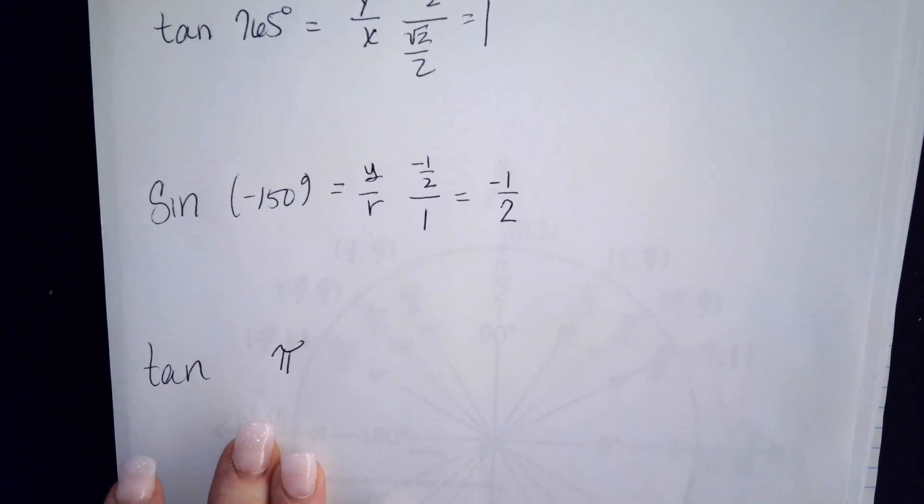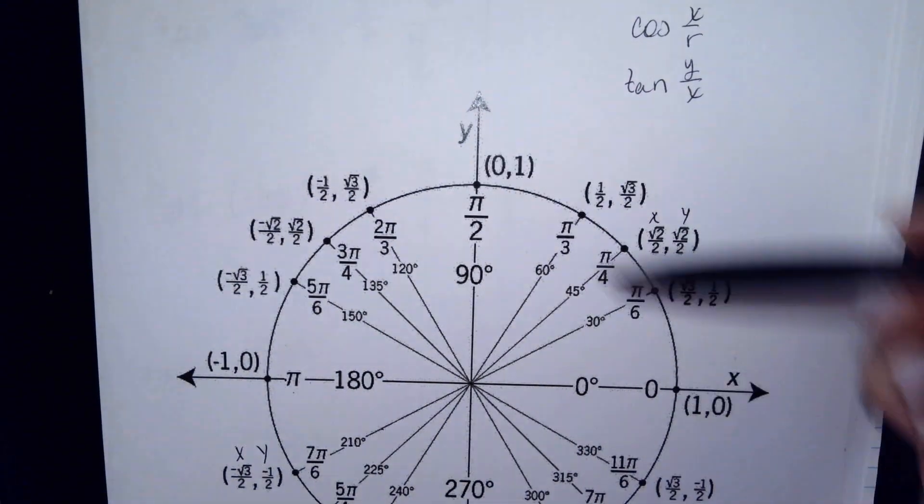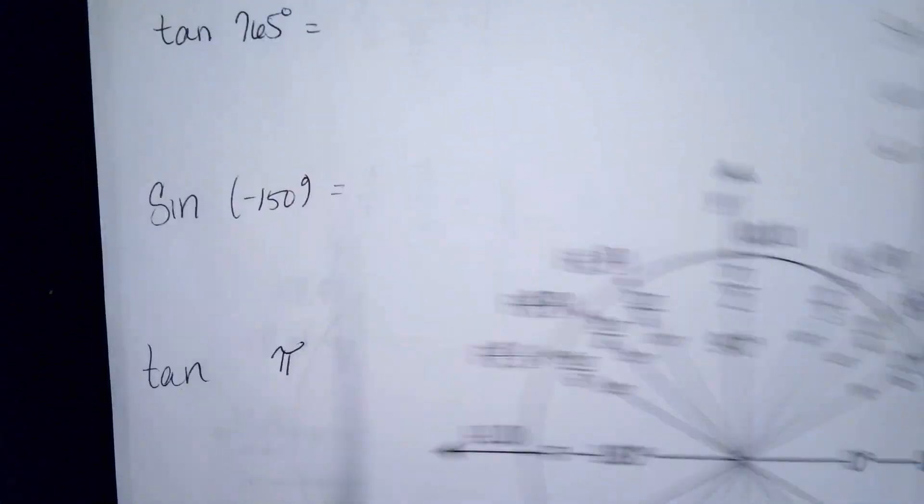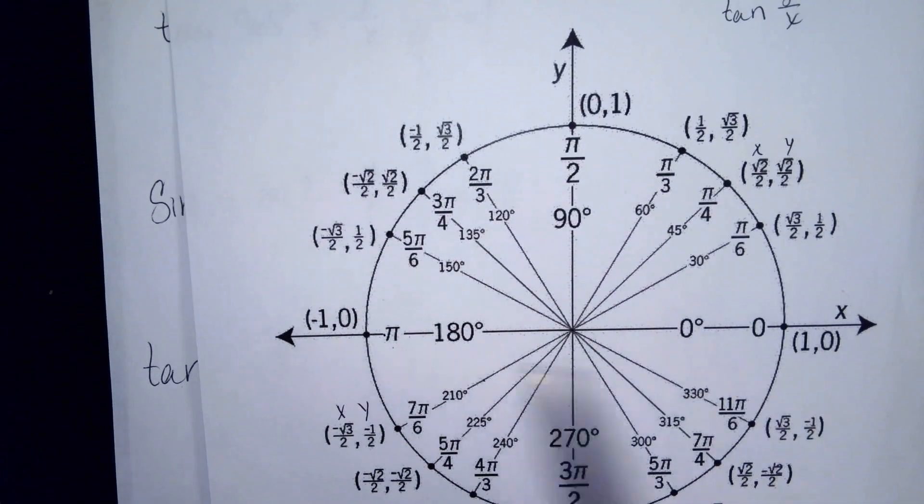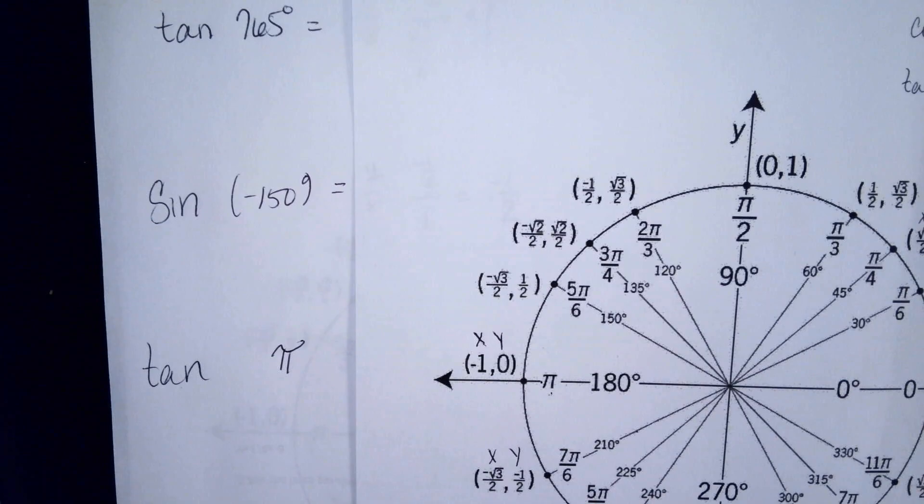Our third one that we're going to look at today is the tangent of pi. Pi is a quadrantal angle. What I mean by that is that it ends up on one of these axes. If you want the tangent of pi, pi lands right here.